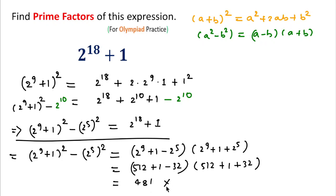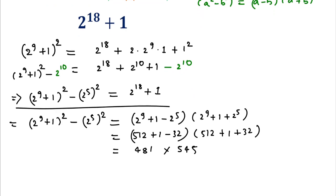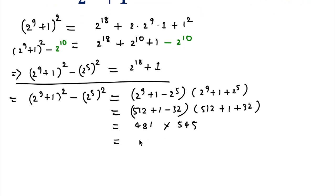...times 545. Now you can easily see 545 is divisible by 5, so I can write this as 5 × 109. Both 5 and 109 are prime numbers.